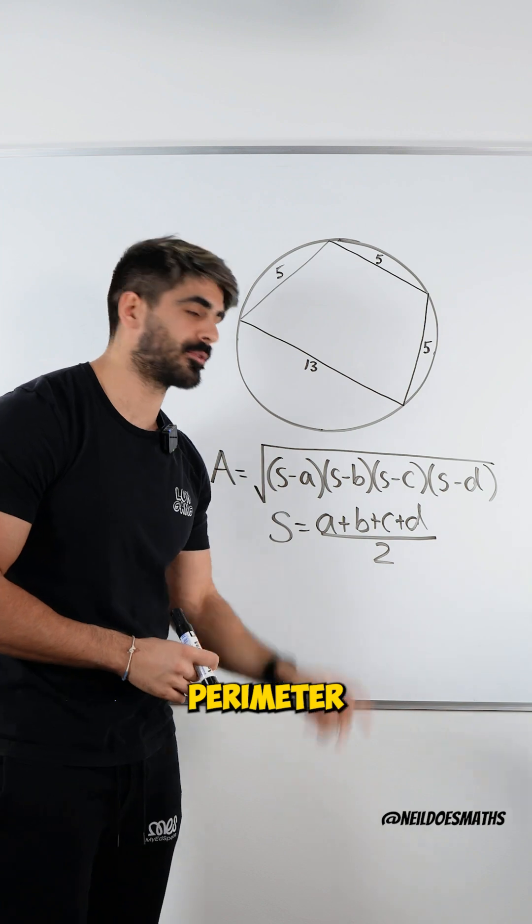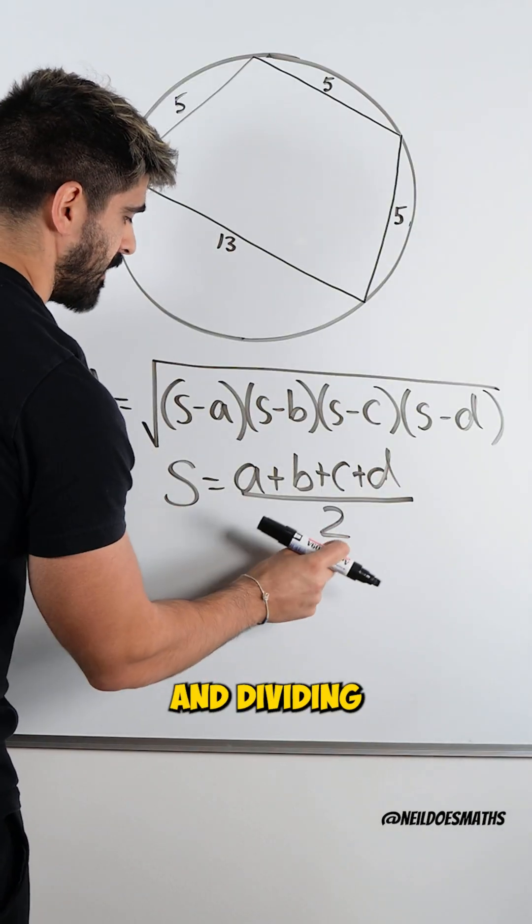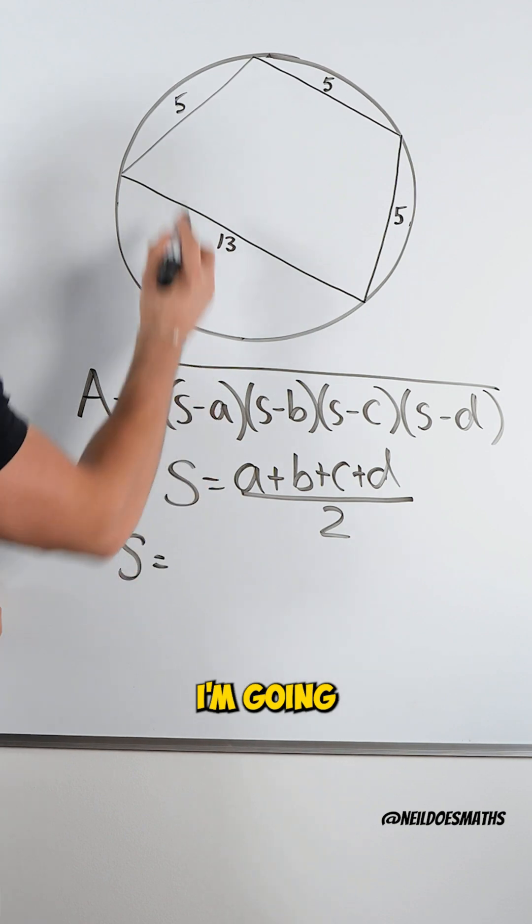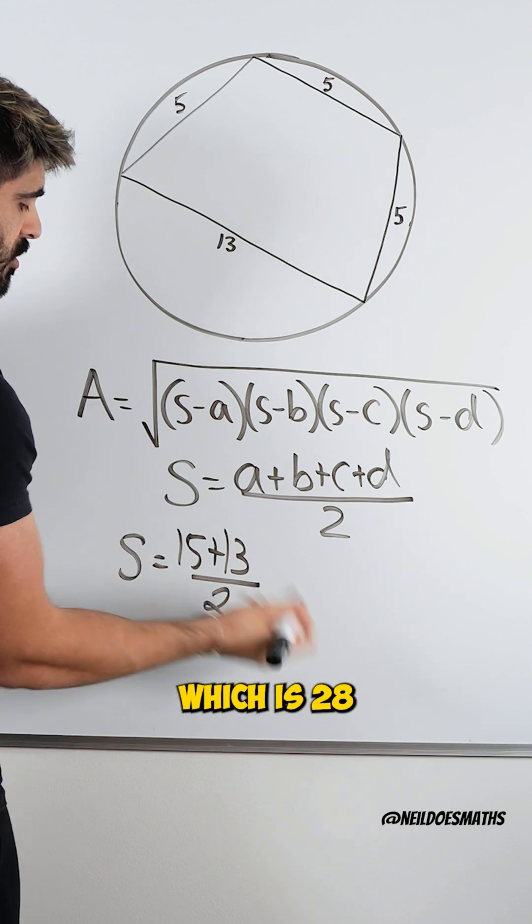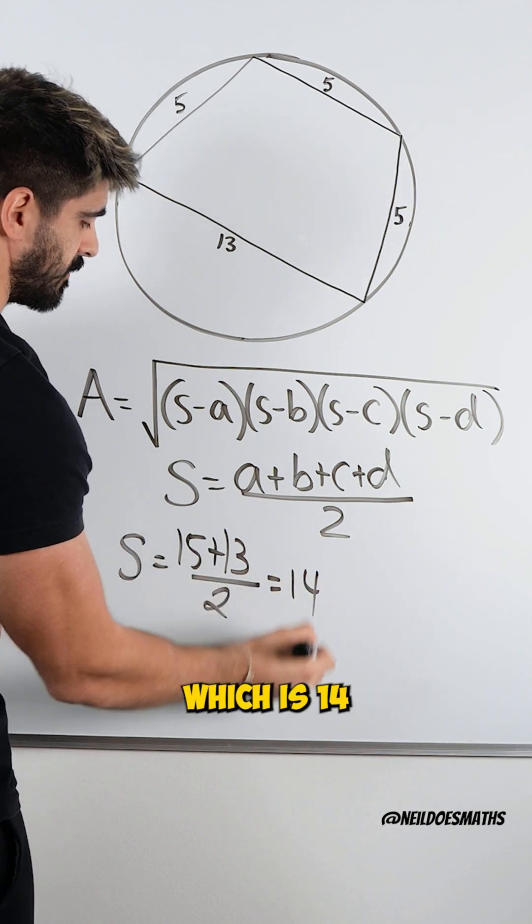So the first thing I would do is find the semi-perimeter by adding up all the lengths and dividing by 2. And in this case I'm gonna have 5 plus 5 plus 5 which is 15 plus the 13 divided by 2 which is 28 divided by 2 which is 14.